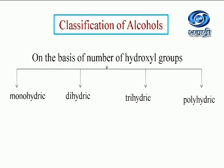Depending upon the number of hydroxyl groups, you have to write mono, di, tri and poly, and then write their definition with one example each.